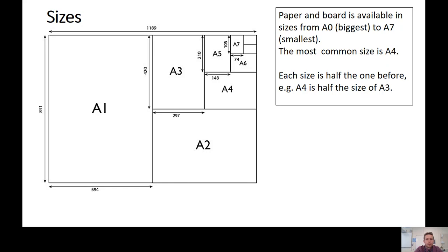You're probably most familiar with A4 — that's what we use most commonly in exercise books and paper from shops. But it gets bigger and smaller: we can have A3, A2, A1, and up to A0. And it gets smaller down to A5, A6 and A7 — A6 being roughly a postcard size, A7 maybe the size of a business card. There's a rule to follow: each size is half the one before. So A4 is half the size of A3, and A3 is half the size of A2. These sizes aren't random — there's a pattern.